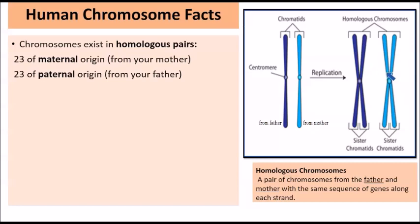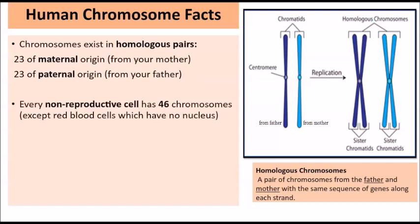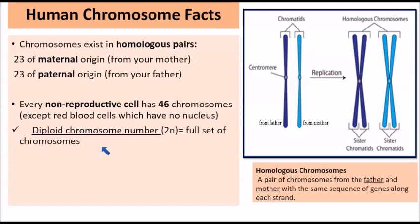We have 23 chromosomes that come from our mother and 23 chromosomes that come from our father, so that is what is meant by a homologous pair. Every non-reproductive cell has 46 chromosomes — 23 from the mother plus 23 from the father. This is known as the diploid chromosome number, usually denoted by 2n, meaning that the chromosomes exist in pairs — a full set of chromosomes.